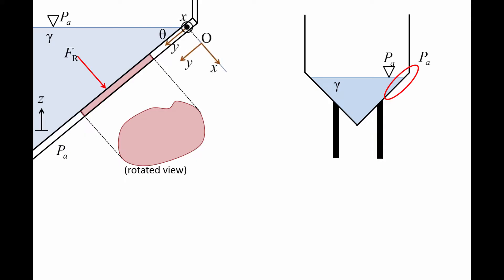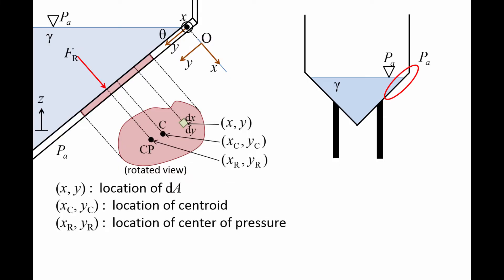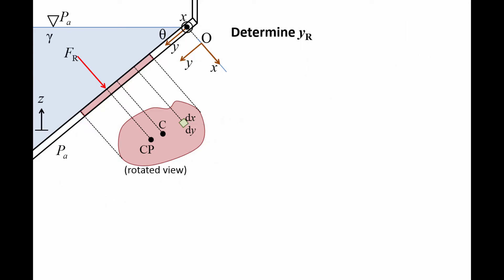The origin of the coordinate system is shown in the left diagram. The x-coordinate comes out of the screen and is oriented along the free surface. The y-coordinate is oriented along the section of wall we wish to examine. The coordinates of the center of pressure are XR, YR. The centroid of the free surface is labeled as C and its coordinates are XC, YC. The location of some arbitrary area, DA, on the surface is located at coordinate XY. We will first determine the y-coordinate of the center of pressure, YR.